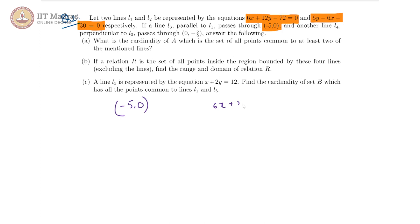L1 is 6x + 12y - 72 = 0, which tells us that 12y = -6x + 72, and that gives us y = -x/2 + 6. So the slope here is -1/2 because y = mx + c. The slope is -1/2.